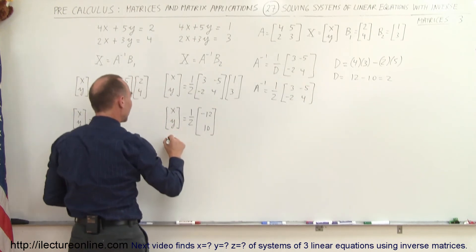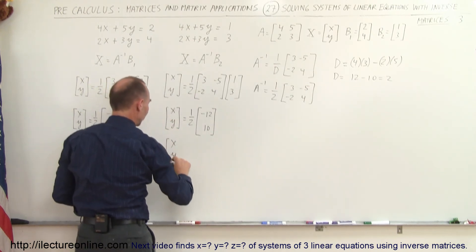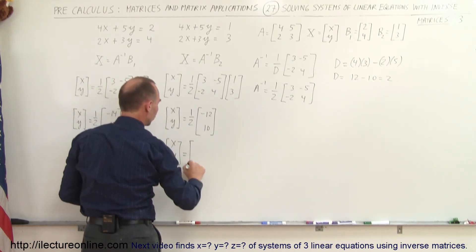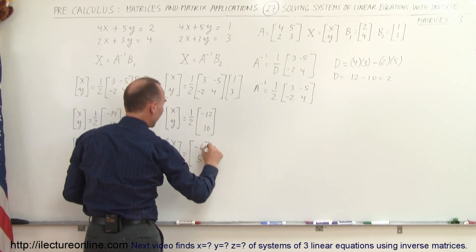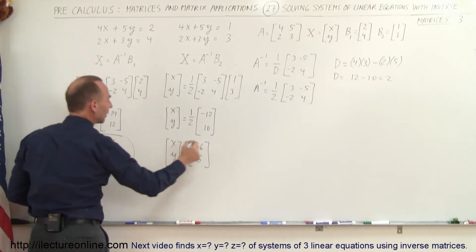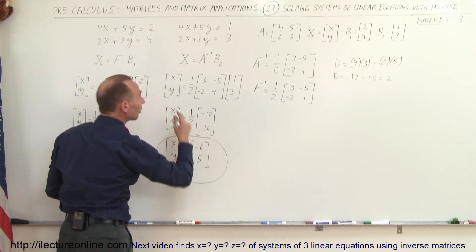And so we can see that in this case the solution for that system of linear equations is equal to minus 6 and positive 5.